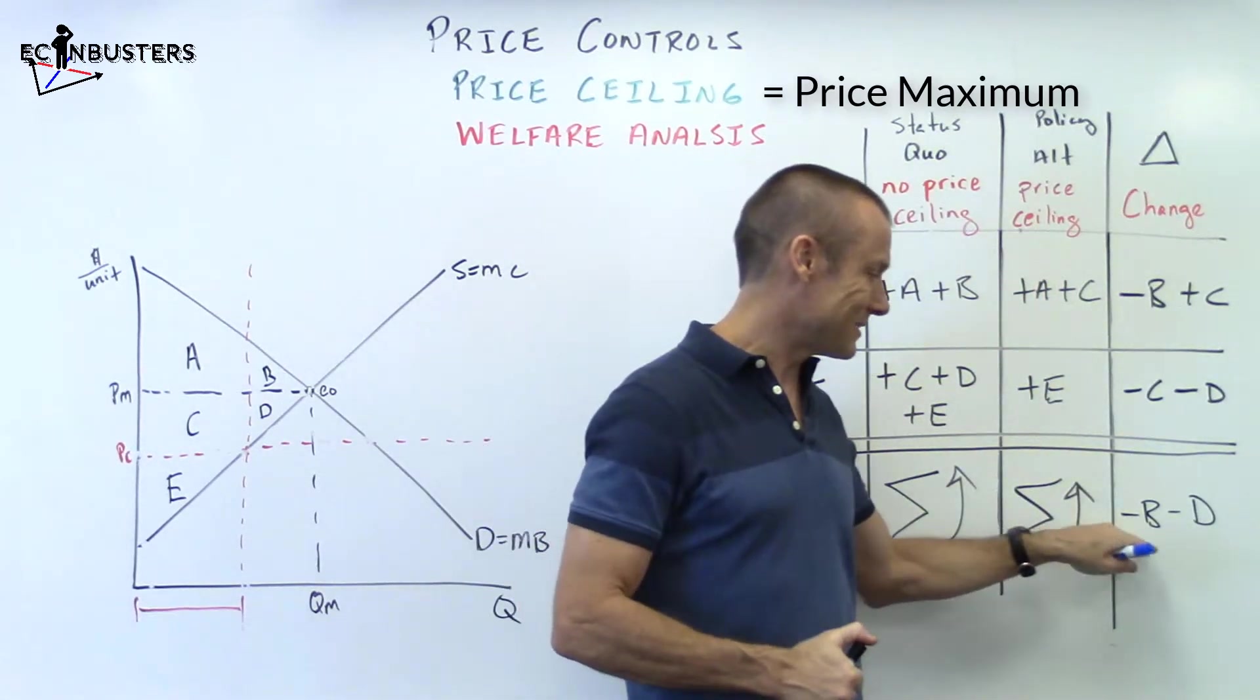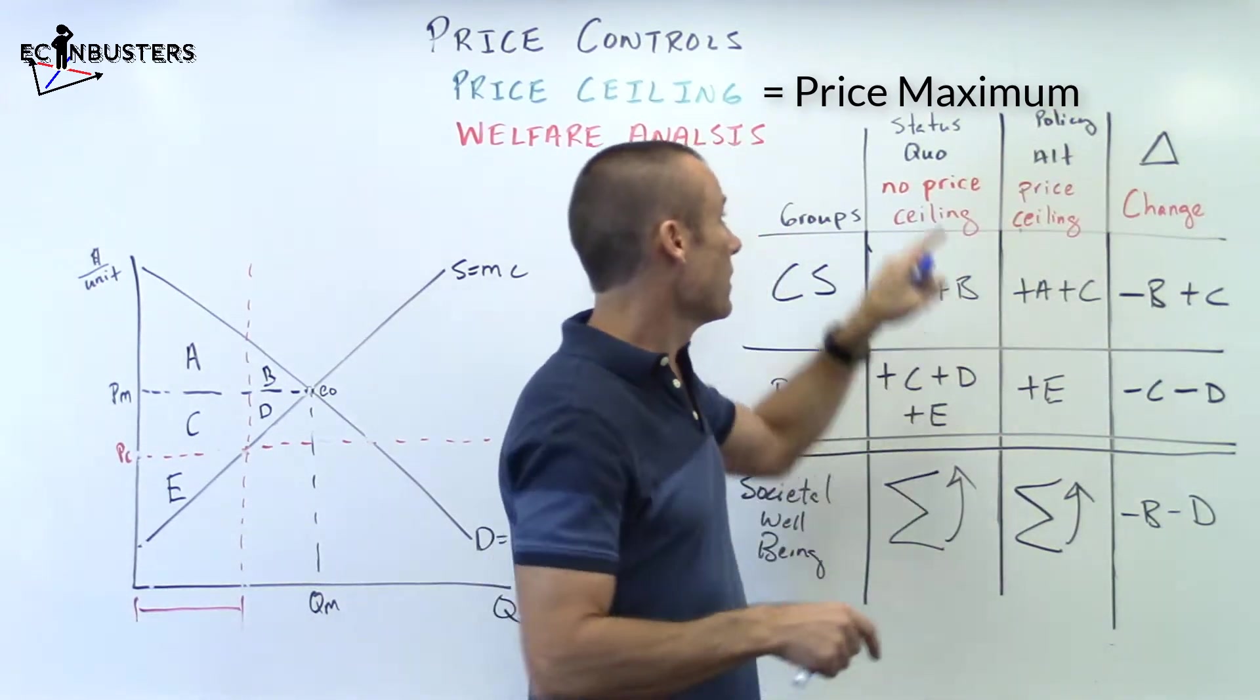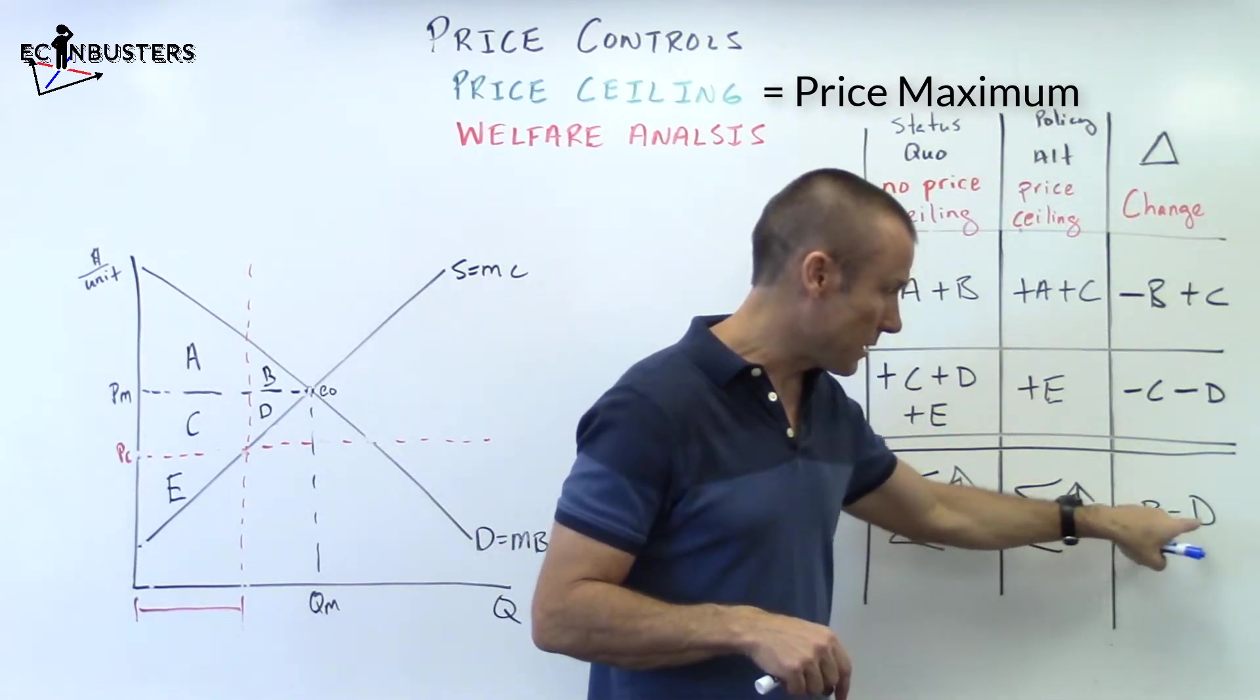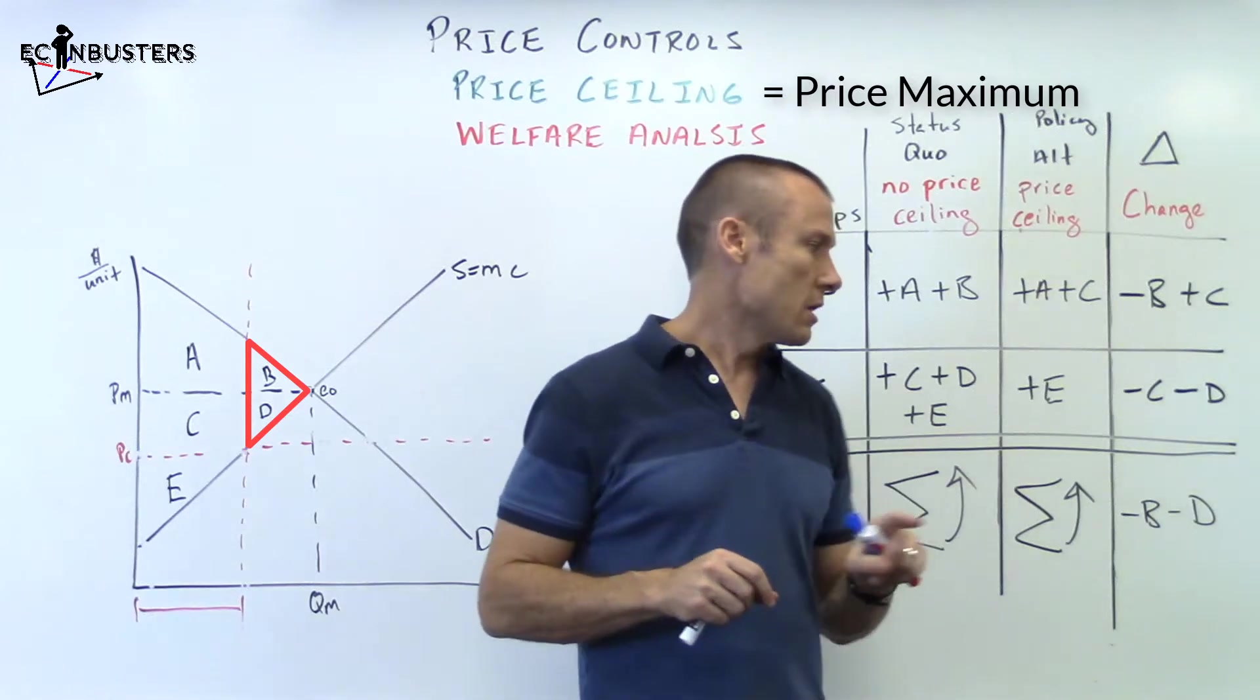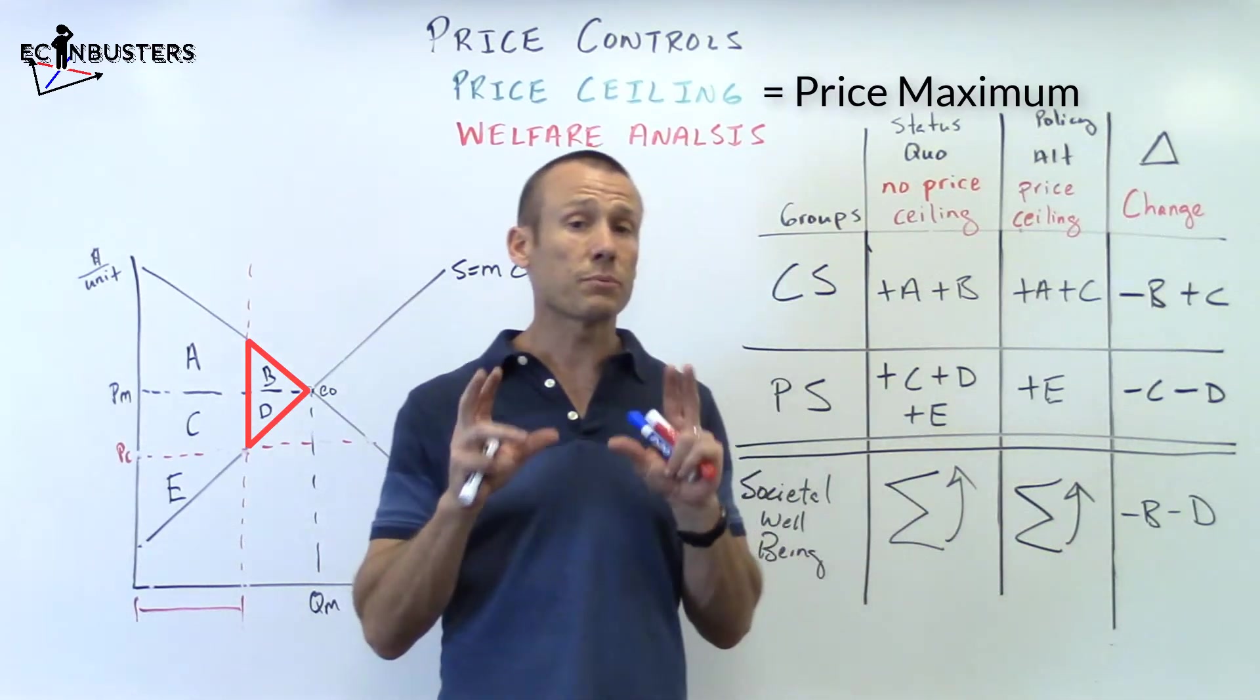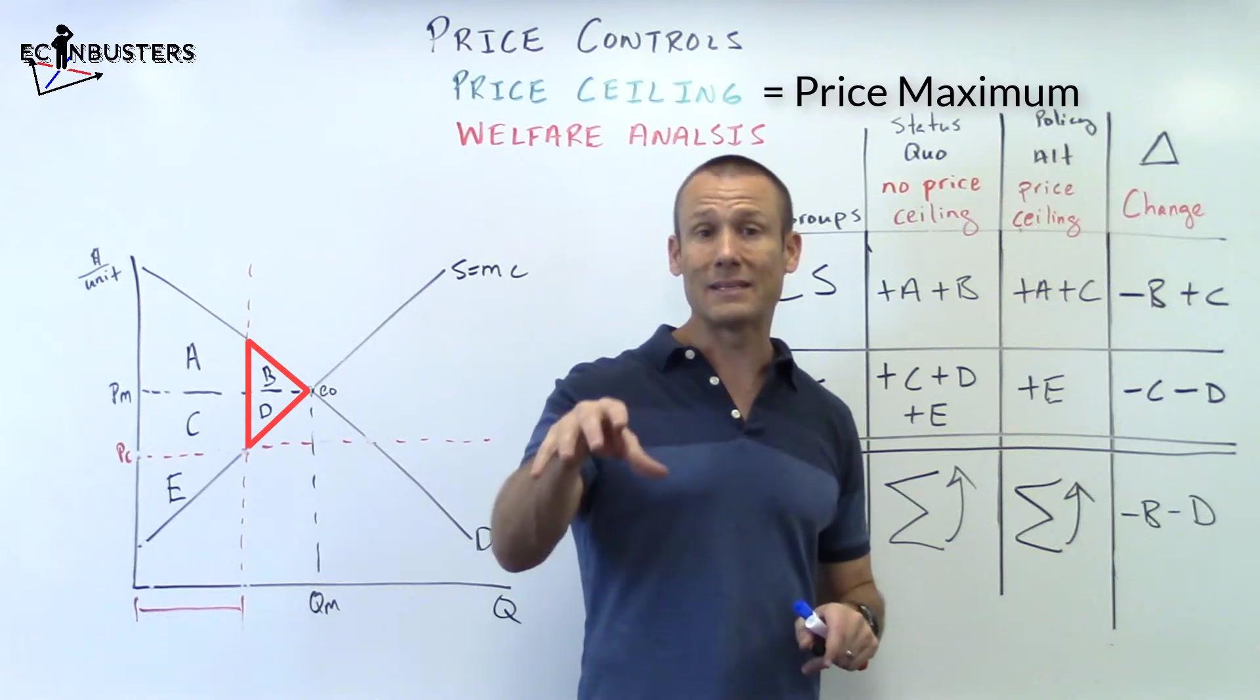So what does this mean? This right here, this result tells us that the policy alternative is worse than the status quo policy by the areas minus B, minus D. Now, we're just bringing a little addendum now. This is sometimes going to be referred to as deadweight loss. I'm going to tell you that there's complexities so that this doesn't necessarily mean it's going to be deadweight loss. What is deadweight loss? It is the amount by which we fall short of max social surplus.